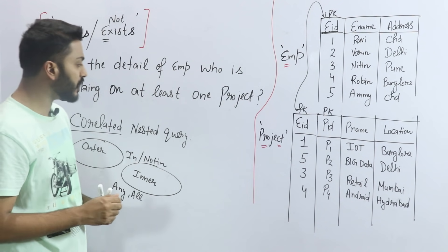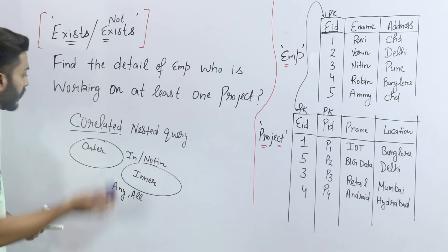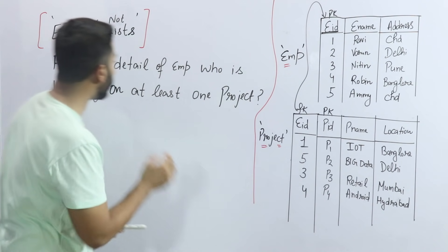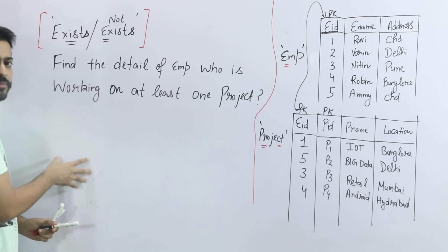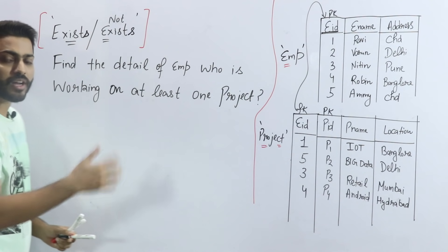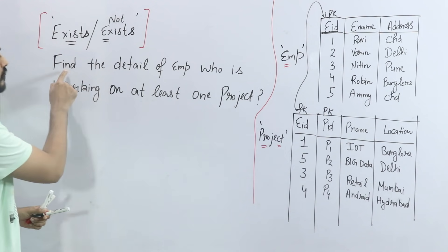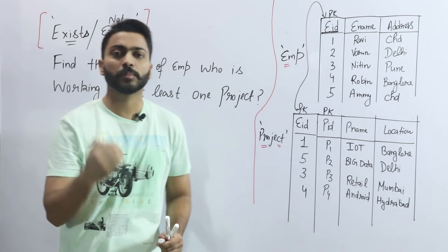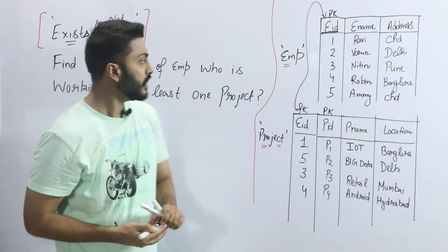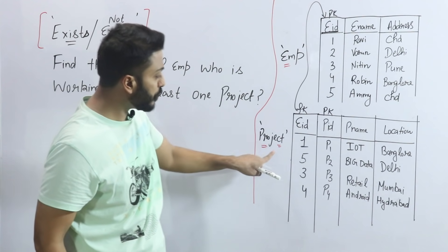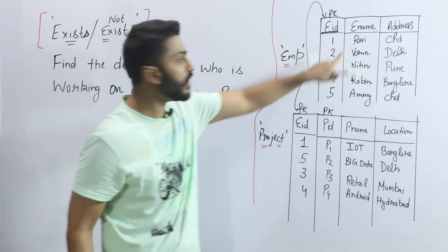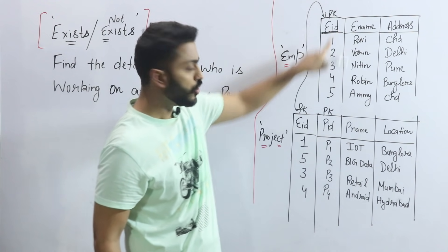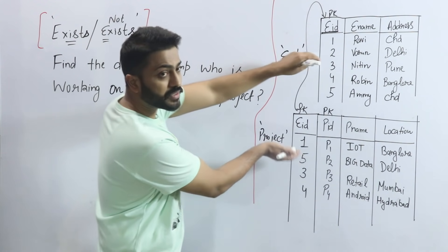Let me give you an example of this. First, you have to understand what correlated means in the correlated nested query. The example query is: find the details of employees who are working in at least one project. That means find employee details where the employee is in at least one project. Here I have an employee table, a project table, and in the project table I have employee ID as a common column, which acts as a foreign key referencing the primary key. And in the project table, the primary key is PID. So this is our schema — two tables.